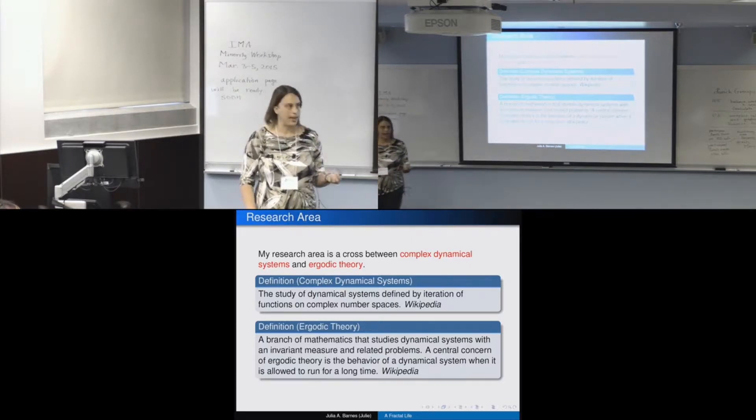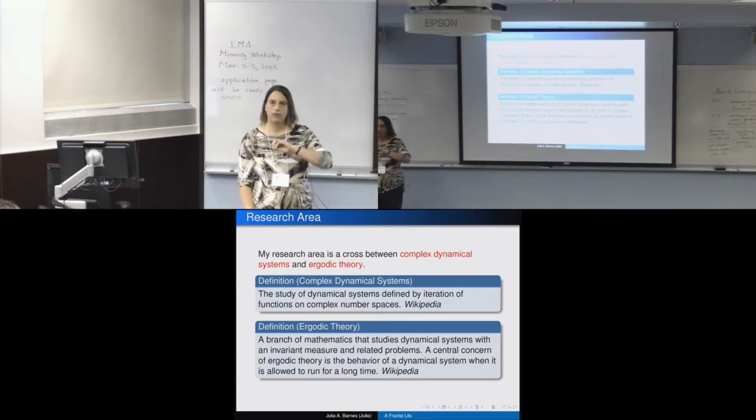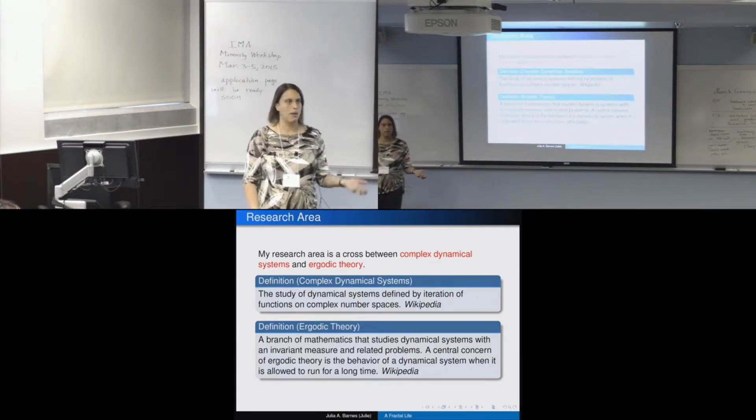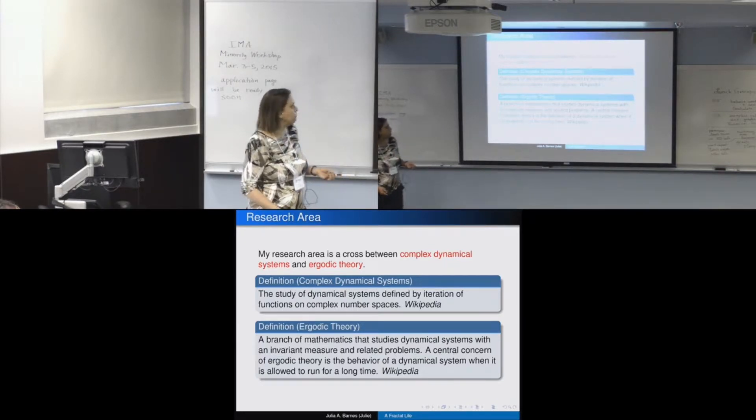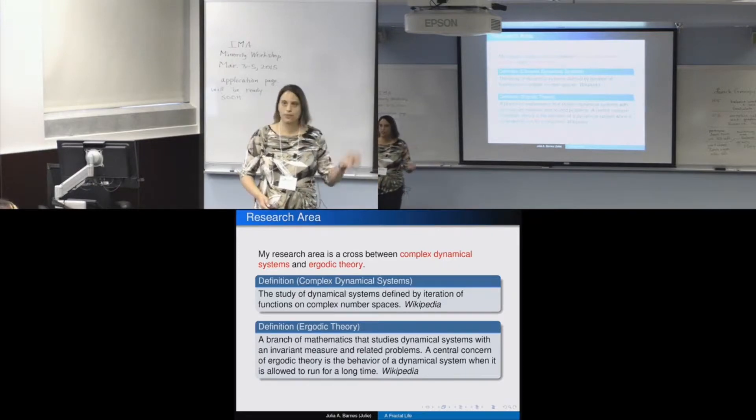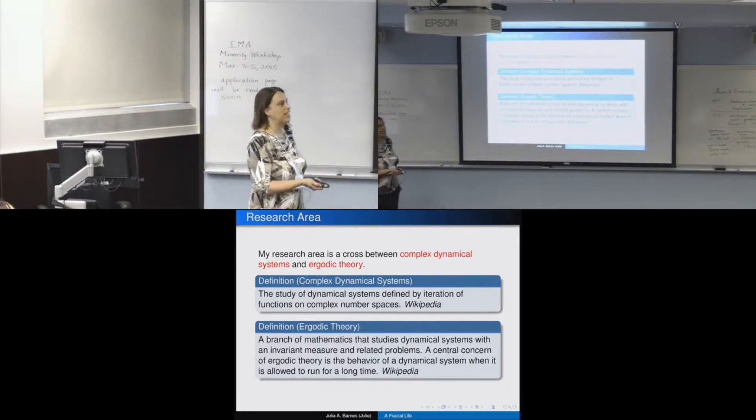And ergodic theory is a branch of math that works on invariant measures and looks at those iterated functions and sees what happens over time. So you can talk about how chaotic they are, and how points scatter all over the place, or whether they come back, and that sort of thing. And, yeah, Wikipedia. So we're not talking about deep definitions at the moment.